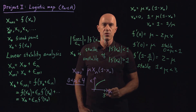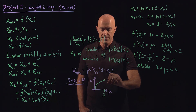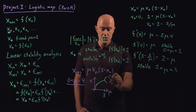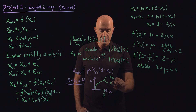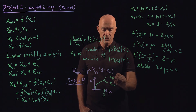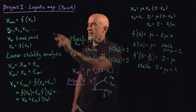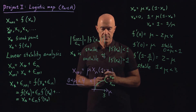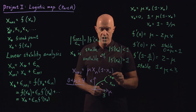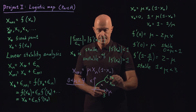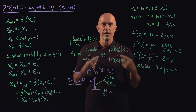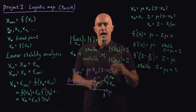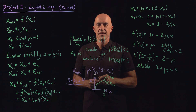At mu equals 3, something special happens: both fixed points of the logistic map become unstable. What happens is a bifurcation — you end up with a period-2 cycle with two values x star and x double star, where the iterations bounce back and forth: f of x star equals x double star and f of x double star equals x star. Then it bifurcates again to a period-4 cycle, then a period-8 cycle, and eventually the x values have no real pattern — this is what we call chaos.